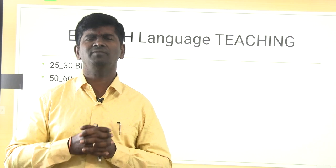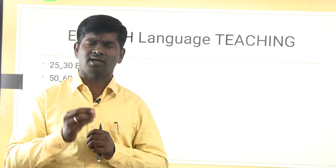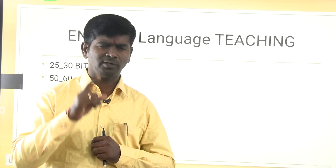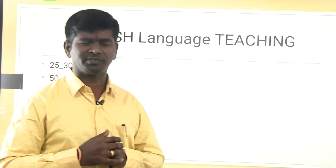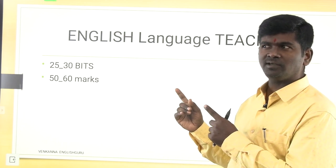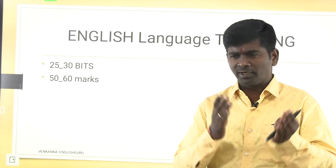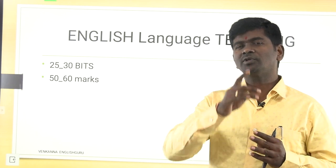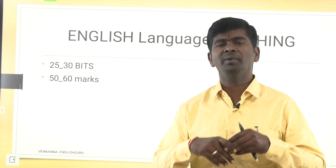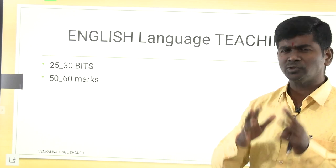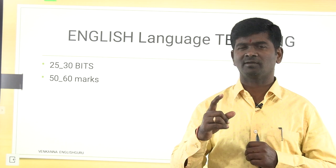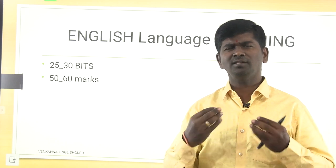If you really want to be a junior lecturer or degree lecturer, everybody reads history of English literature and answers questions on texts and writers. But there are two important factors that change your fate: one is criticism and critical concepts, and the second one is English language teaching. Based on criticism there are nearly 20 plus bits, and based on ELT there will be 30 to 35 bits — nearly 50 bits, 100 marks — which will determine whether you are selected.